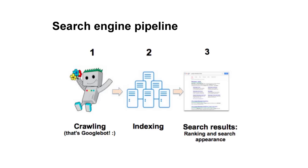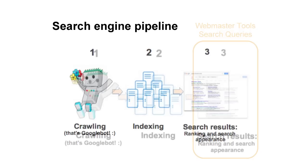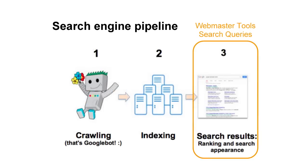To give some background, the first step of the search engine pipeline is crawling, then indexing, and last is search results, which includes ranking and the display of results to users. Search queries data sheds light on this third step in the search engine pipeline.